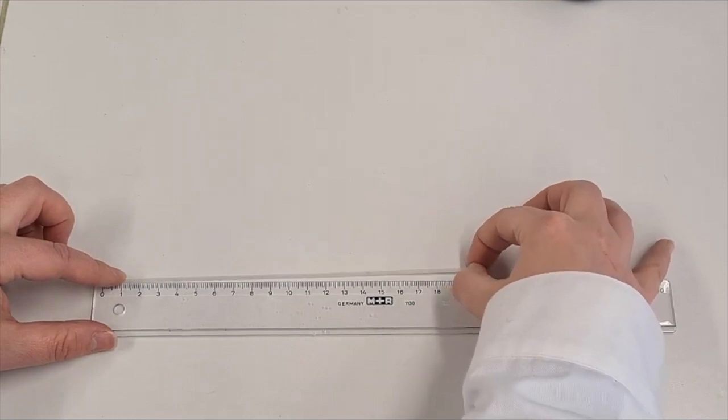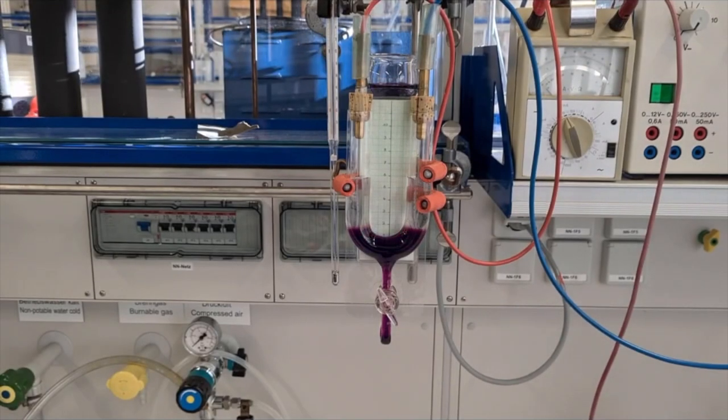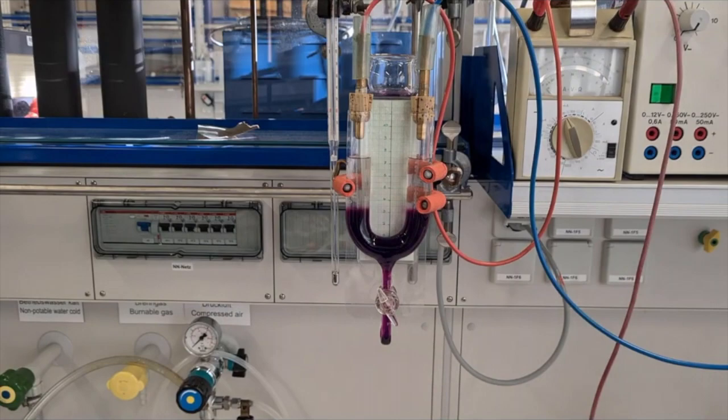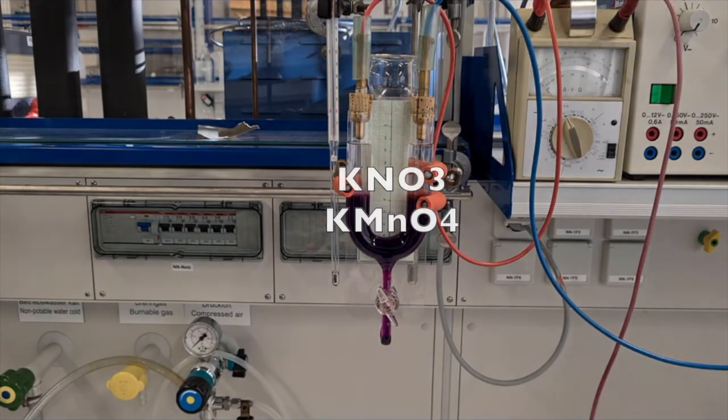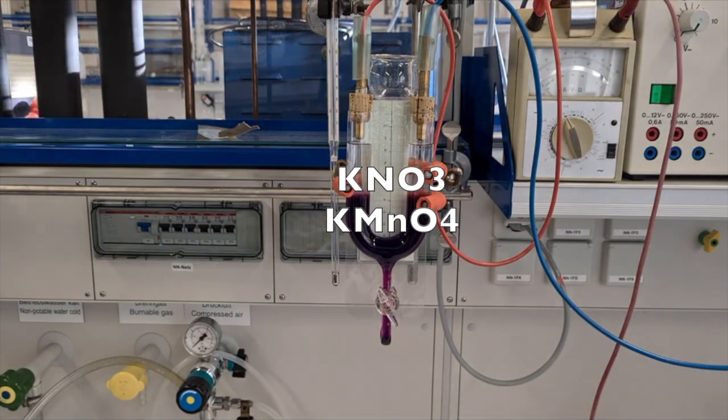Then, potassium permanganate solution is allowed to rise under the potassium nitrate solution by carefully opening the stopcock until the electrodes are immersed.